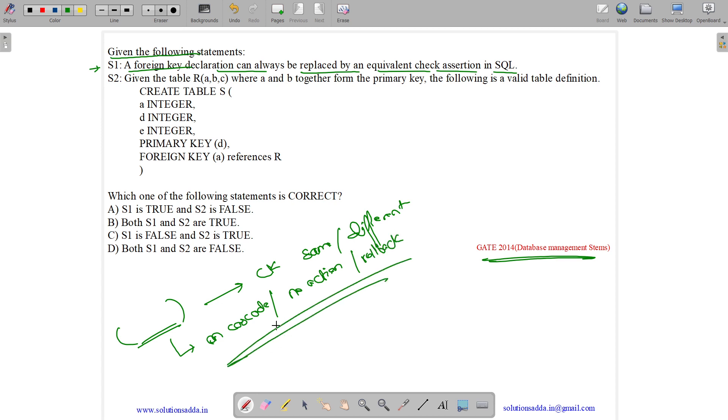So foreign key is basically a candidate key. Foreign key has the constraints which primary key has and even it has more constraints. Now suppose if we have a parent table and a child table.